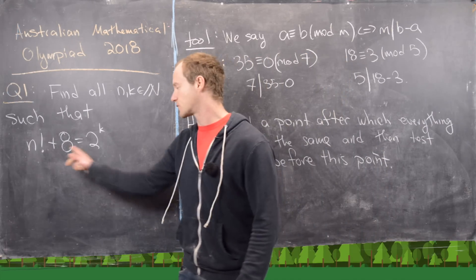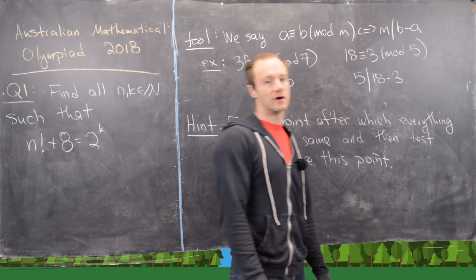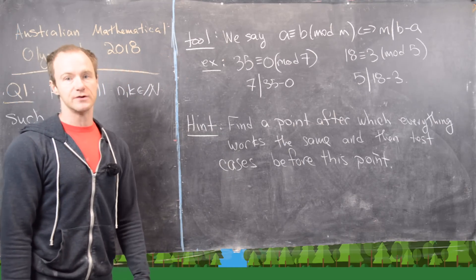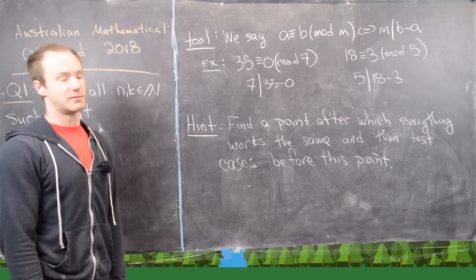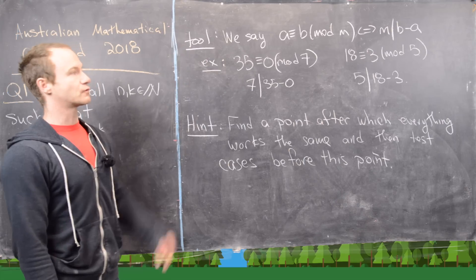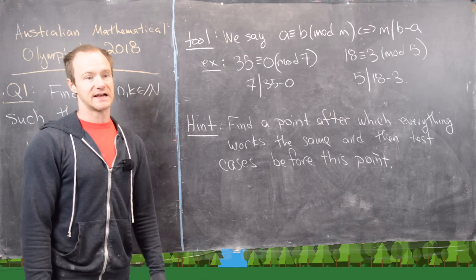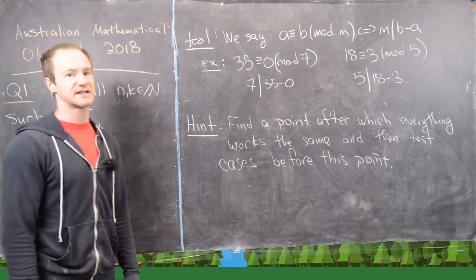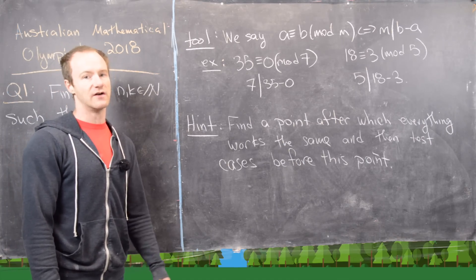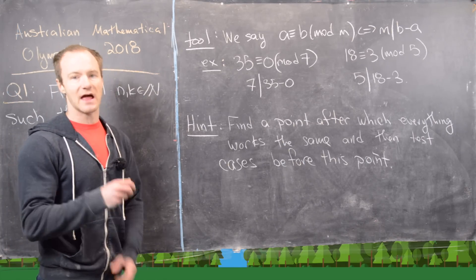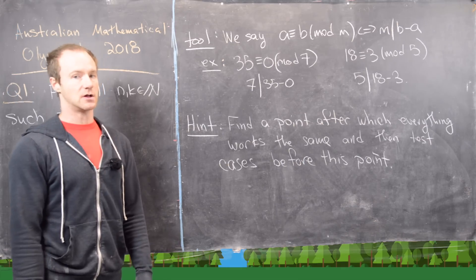In other words, n factorial plus 8 is a power of 2. The tool that we're going to use is congruence mod m. This shows up enough in math contests that it's good to practice with this kind of stuff and have a good knowledge of congruence mod m and all of the basic theorems that go along with it.